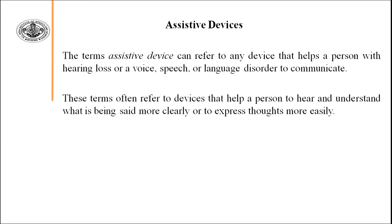As you can see, the topic is Assistive Devices. Assistive Devices means devices which will help — that is the Assistive Device. The term Assistive Devices can refer to any device that helps a person with hearing loss, or a voice, speech, or language disorder to communicate, since our topic is restricted to speech and hearing impairment.